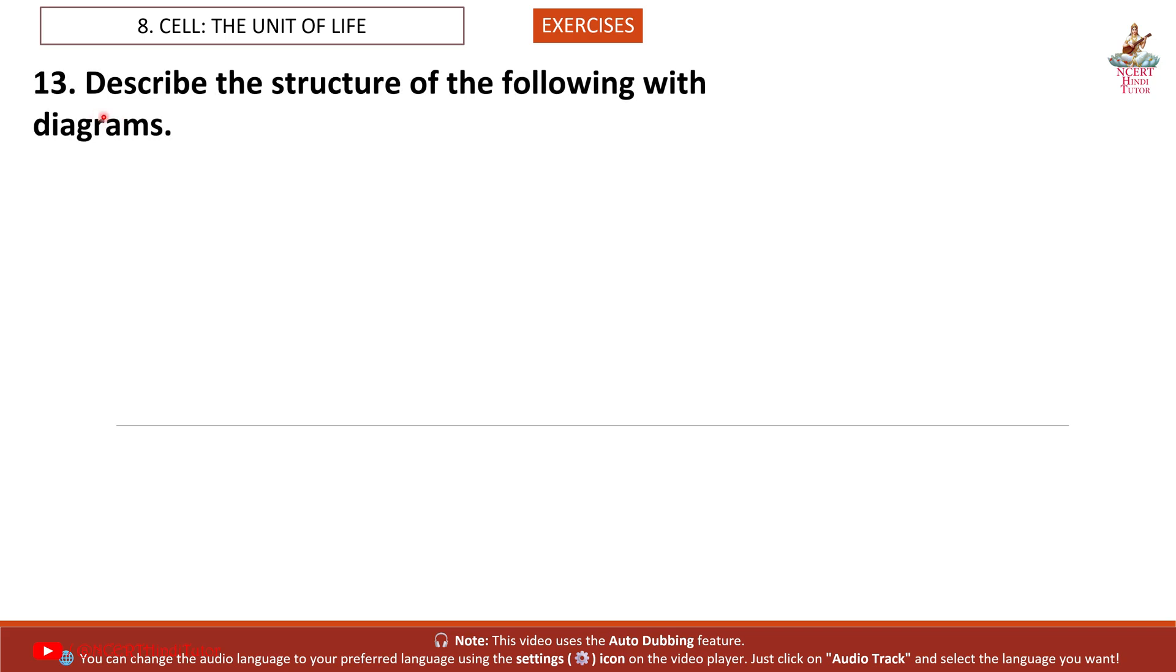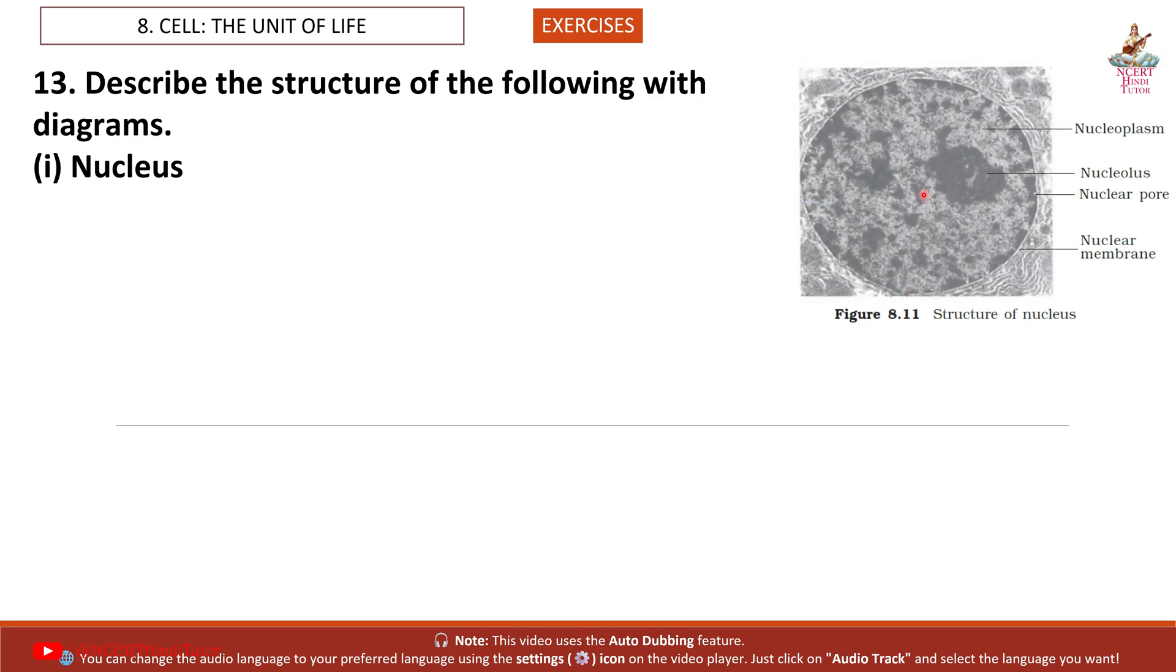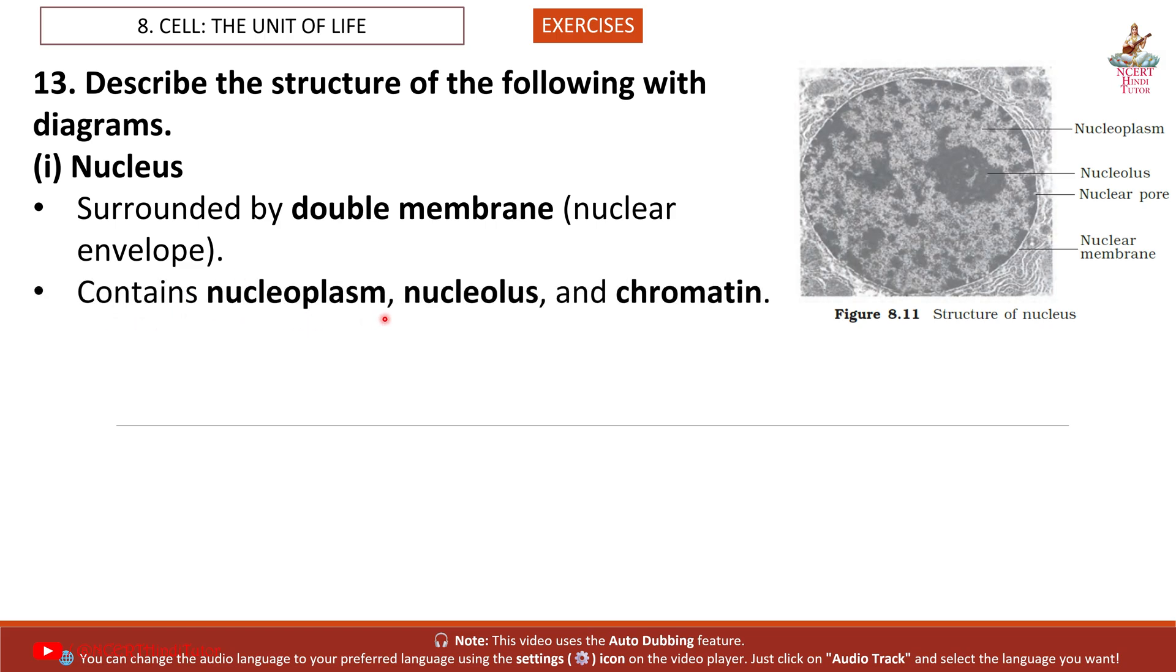Question 13: Describe the structure of the following with diagrams. 1. Nucleus. So friends, this is the diagram. Surrounded by double membrane, nuclear envelope. Contains nucleoplasm, nucleolus and chromatin. Has nuclear pores for exchange of materials.